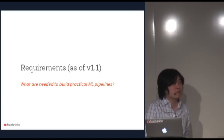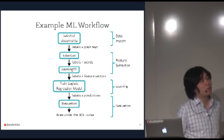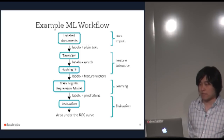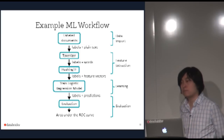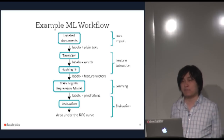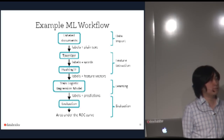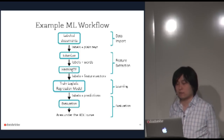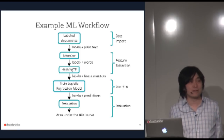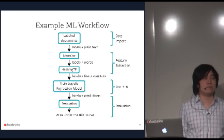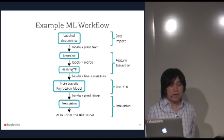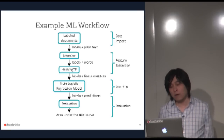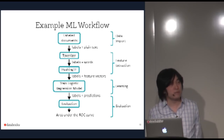Let's talk about the requirements, starting from an example machine learning workflow — a text classification problem. You start with labeled documents, tokenize the text, apply hashing TF to get term frequency feature vectors, then use logistic regression to train a classification model, and evaluate whether the model works well. This seems like a simple workflow.